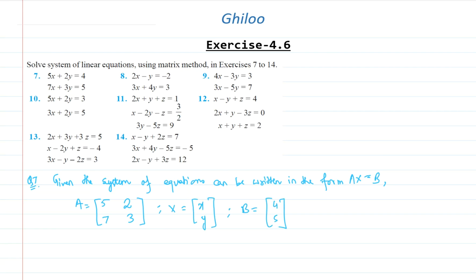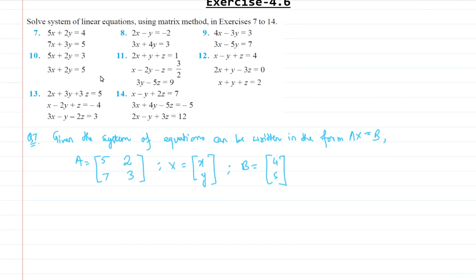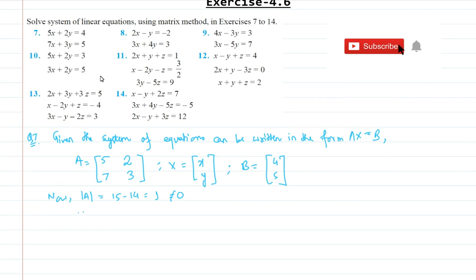Now we need to find the determinant of A. Determinant of A is equal to 15 minus 14, which equals 1, and it is not equal to 0. Therefore A is non-singular.